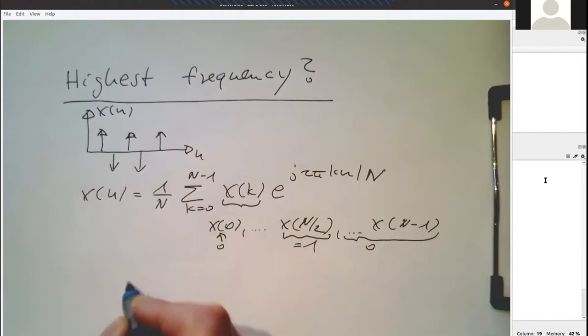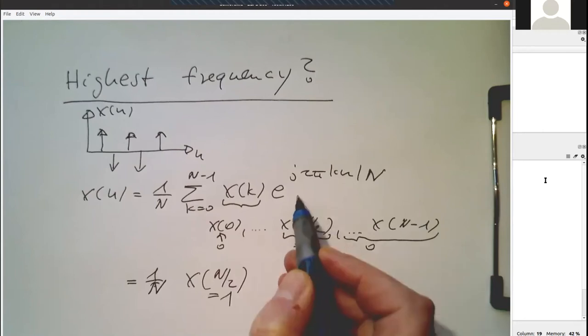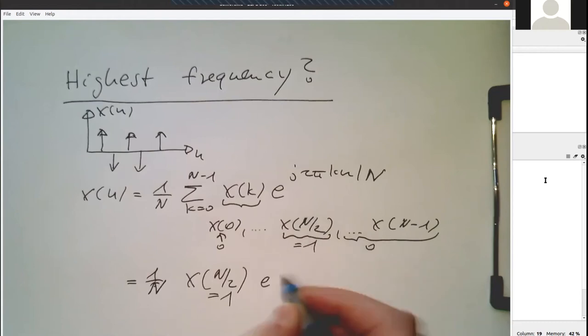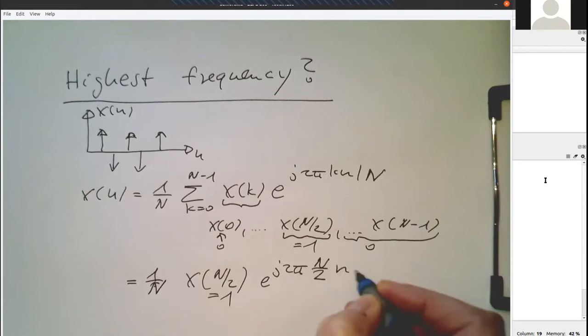So let's have a look at how this resolves. Therefore we have again one over N, so the sum here is no longer there, and we have only x(n/2), and that is one. Then we need to look at the exponential here, so that's e to the j 2 pi, and the k index running here is n/2, and then n, and then the whole thing divided by N. We see already the two cancels out.